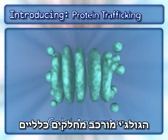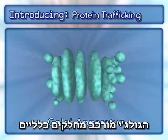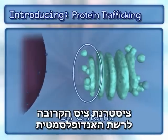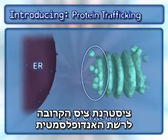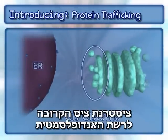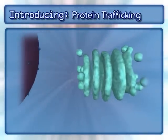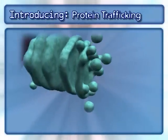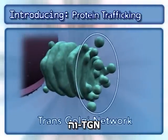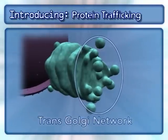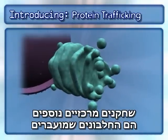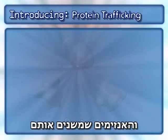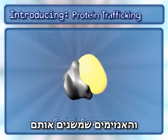The Golgi apparatus consists of general components: the cis-cisterna nearest to the endoplasmic reticulum, the medial and trans-cisternae, and the trans-Golgi network. Other key players in this process are the proteins being transported and the enzymes that modify them.